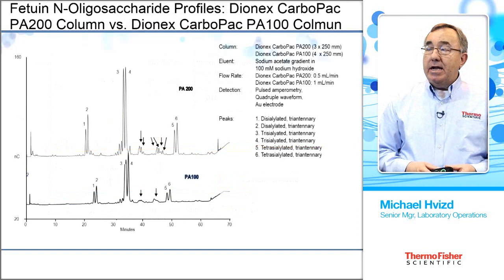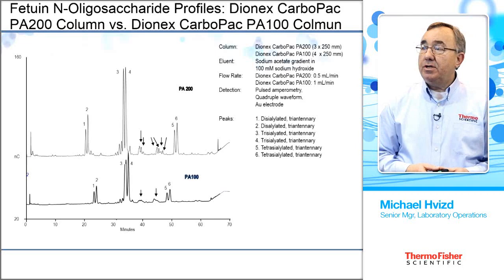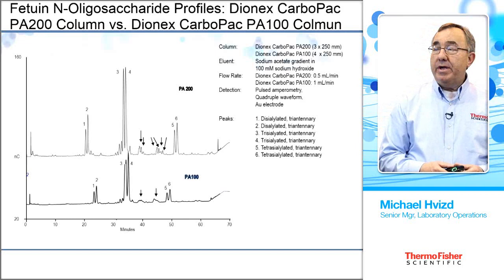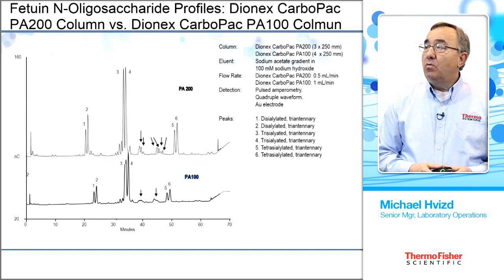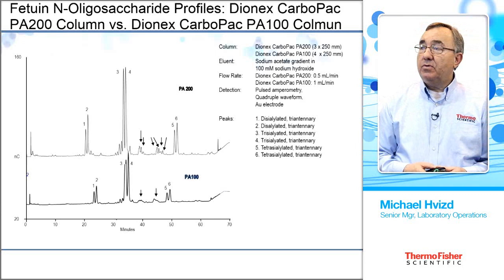Here again is an illustration comparing the PA100 to the PA200. Notice where I have arrows on the two chromatograms. On the PA100, we can see there's definitely some material there, but it's not very well resolved. Whereas on the PA200, we get very distinct and sharp peaks — the resolution is much improved because of the smaller particle size on the PA200.